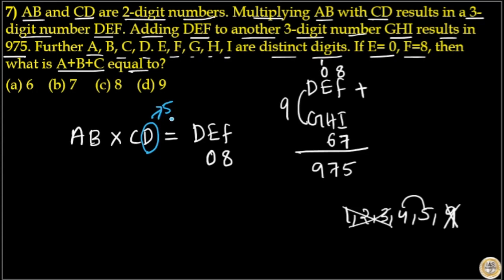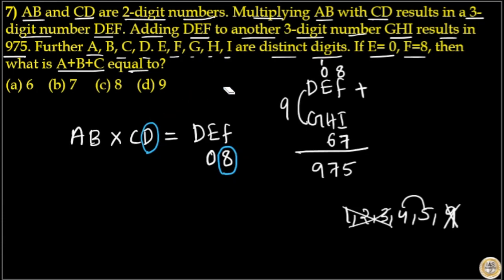If I take D as five, any number multiplied with five will give a unit digit of zero or five. But the unit digit of DEF is eight, since AB into CD gives DEF and the unit digit is eight. That means D cannot be five. Therefore D is equal to four, and G is equal to five.